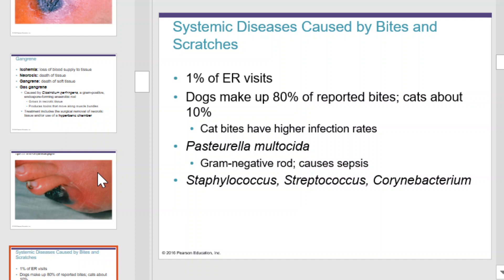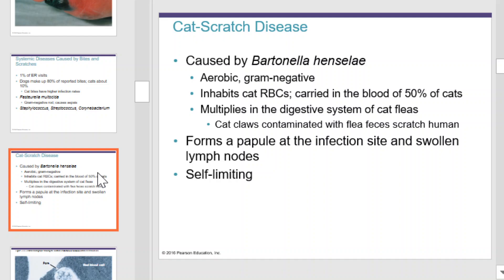Cat scratch disease is caused by Bartonella. This is an aerobic gram-negative rod. It inhabits cat red blood cells and is carried in the blood of 50% of cats. It multiplies in the digestive system of cat fleas. Cat claws become contaminated with flea feces, and when they scratch humans, that's how it's transmitted. Once in a human, it can form a papule at the infection site and swollen lymph nodes. The disease is usually self-limiting.